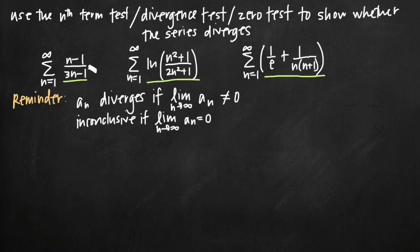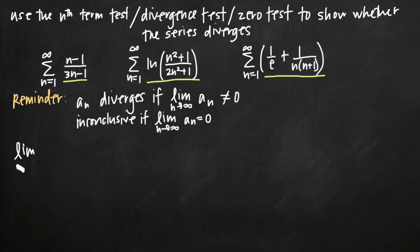Let's look at our first example: the infinite sum from n equals 1 to infinity of (n minus 1) over (3n minus 1). To use the divergence test, we take the limit as n goes to infinity of a_n, which in this case is (n minus 1) over (3n minus 1), and evaluate it.